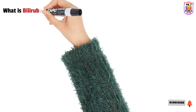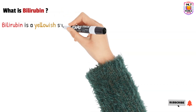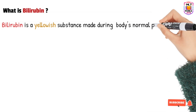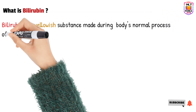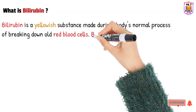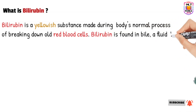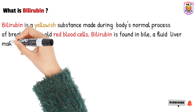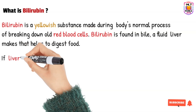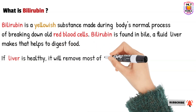Bilirubin is a compound that is produced by the lysis of red blood cells. When RBCs complete their lifespan of 120 days, they break down and bilirubin is released. This bilirubin will be metabolized by the liver, and after metabolism, bilirubin is excreted out through the urine and stool.